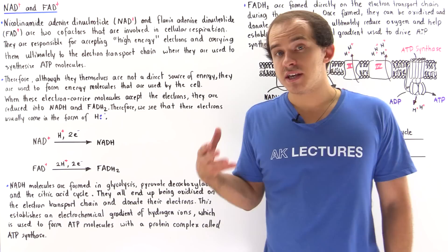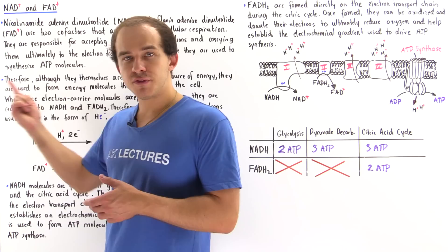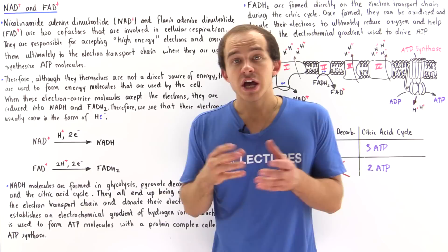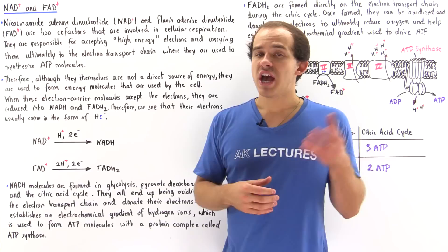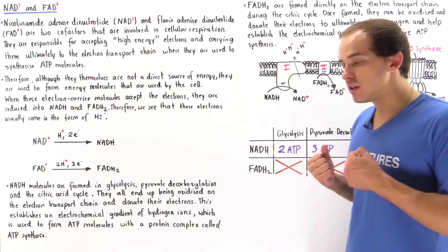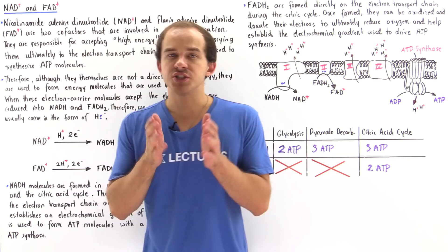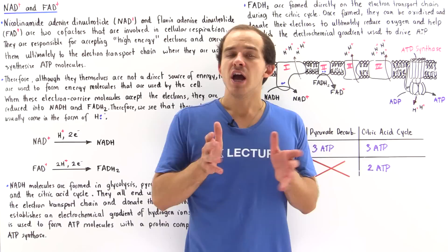The purpose of these two molecules is to accept the high energy electrons that come from fuel sources we ingest into our bodies, including sugars and fatty acids. NAD+ and FAD+ accept electrons and carry these high energy electrons to the electron transport chain found in the inner mitochondrial membrane.